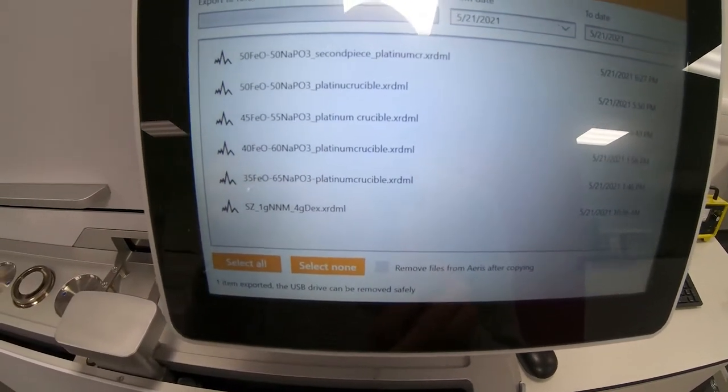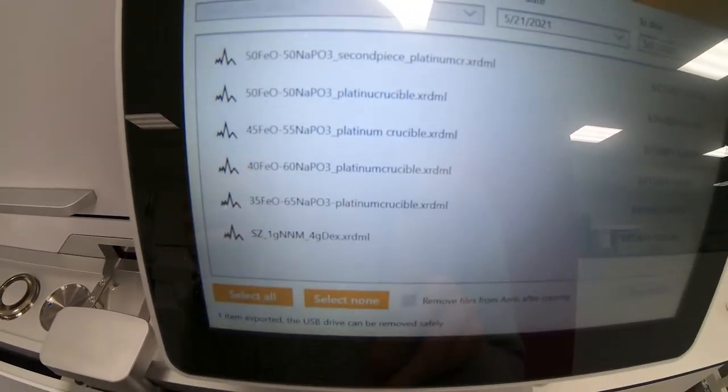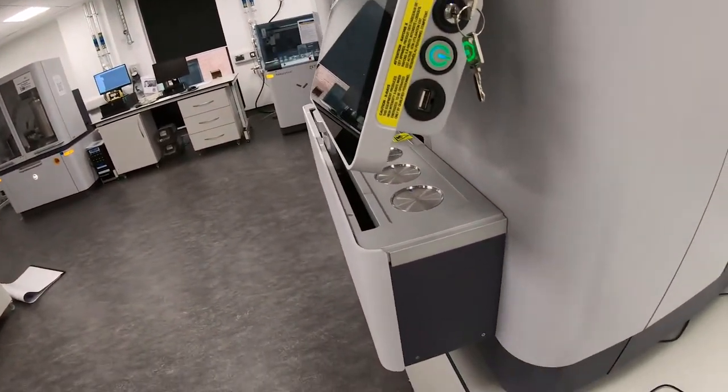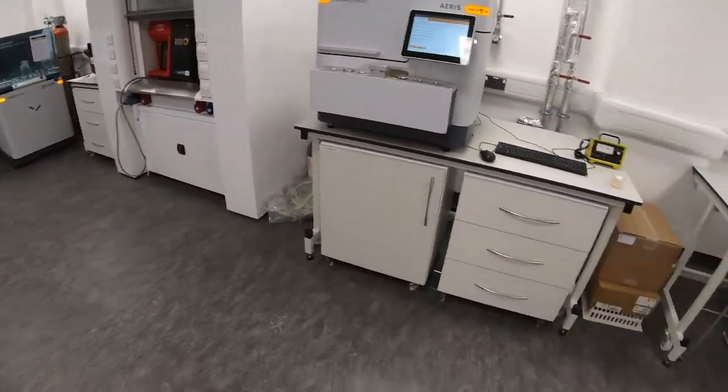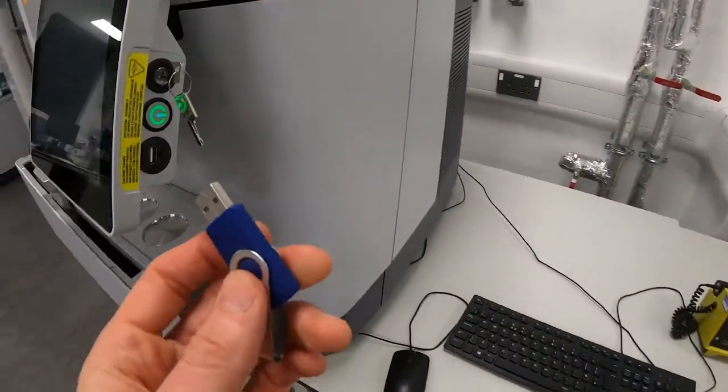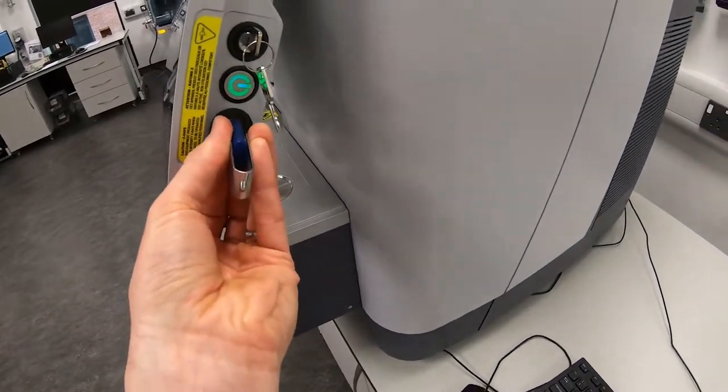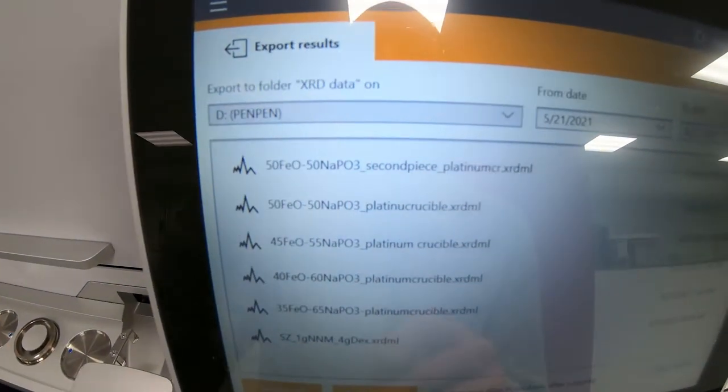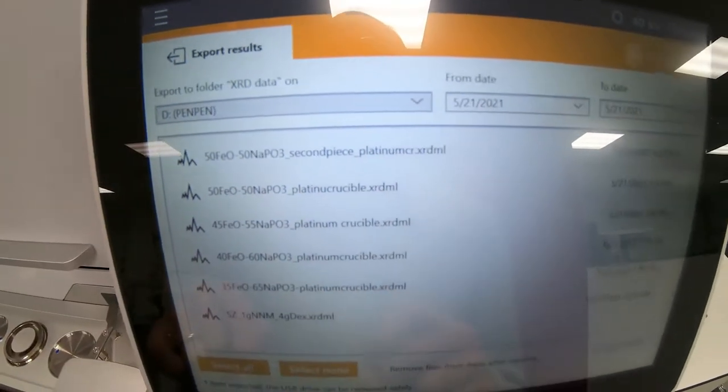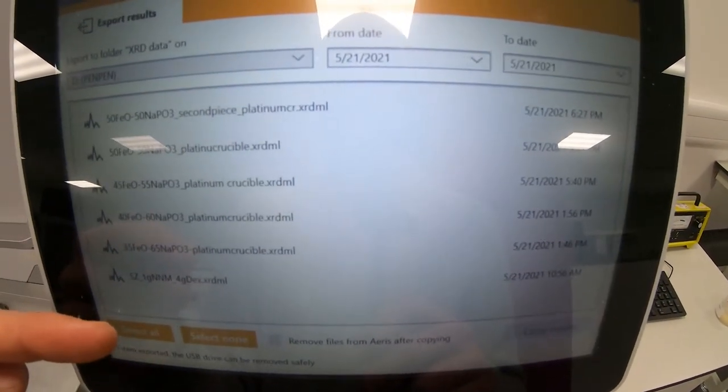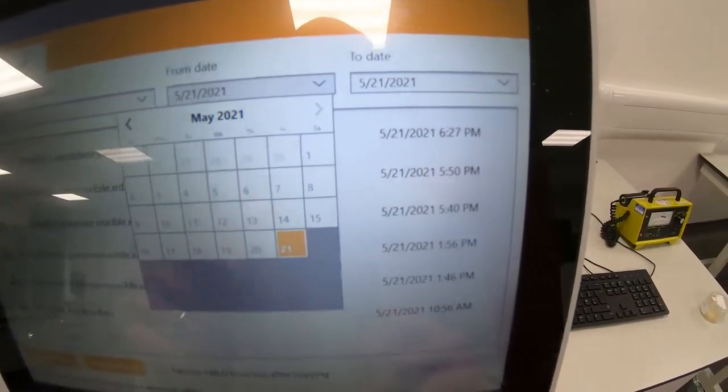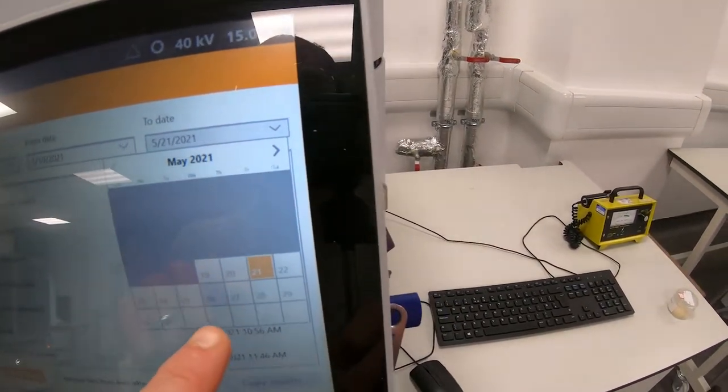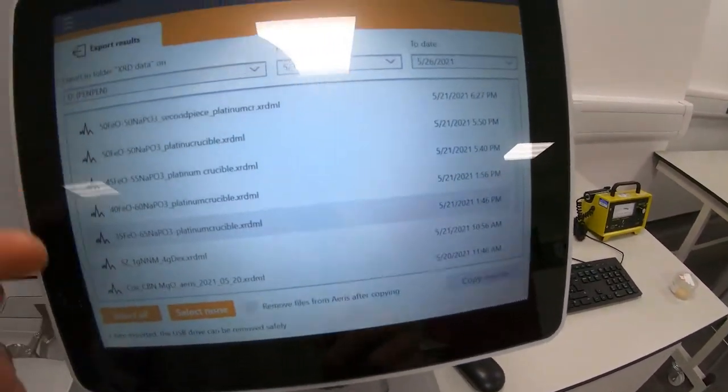Right now the only way to do this is via a memory stick. You can see on the side of the instrument there's a USB port, and I've got a memory stick right here that I'm going to use. Simply put that in. You can see immediately my pen drive has come up in this export folder here. This is all the experiments that have been collected between these two dates. We can change this if I did it a while ago. Today is the 26th, so I can go to the 26th, and it'll show me all the data that's been collected.